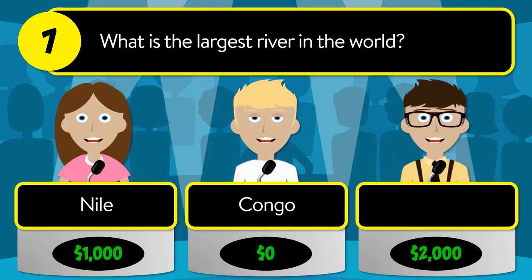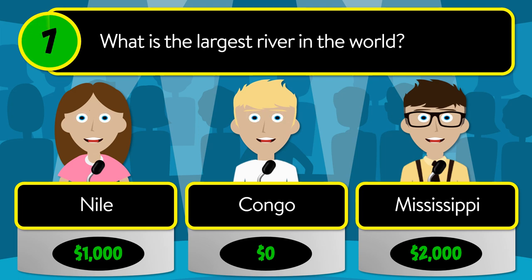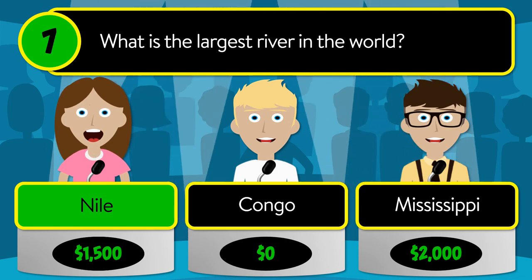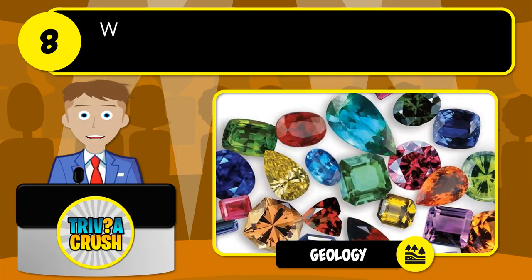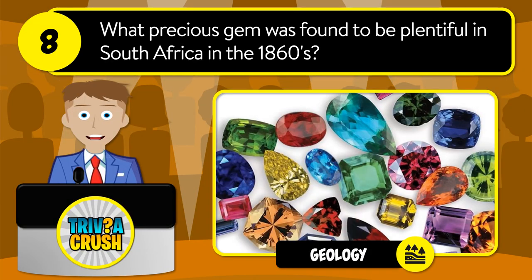Question number seven: what is the largest river in the world? Is it the Nile, Congo, or Mississippi? The correct answer is the Nile.